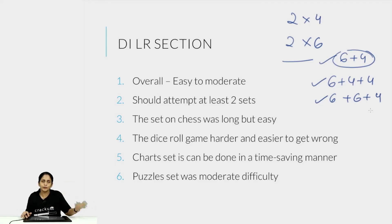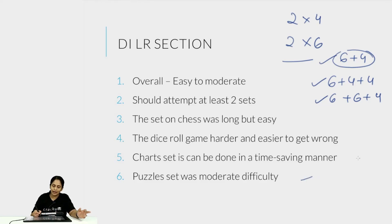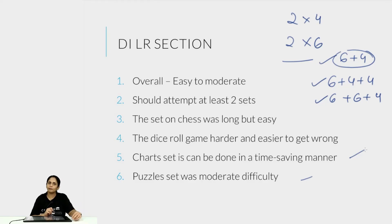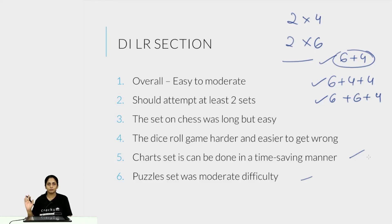Which sets should you have picked? The six-question sets were on chess and on a dice roll games-and-tournaments question. Then there was a charts question and a puzzles question, both four-question sets. Both the four-question sets — puzzles and charts — were easy. The charts was time-consuming but very easy. The puzzles question was harder to solve, but once solved could be done in under eight minutes, allowing a six plus four plus four attempt. Both four-question sets were easy and you should ideally have been able to solve both of them.